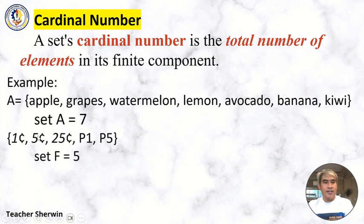How about for another set? Set F: one, two, three, four, five. So the cardinal number of set F is five.